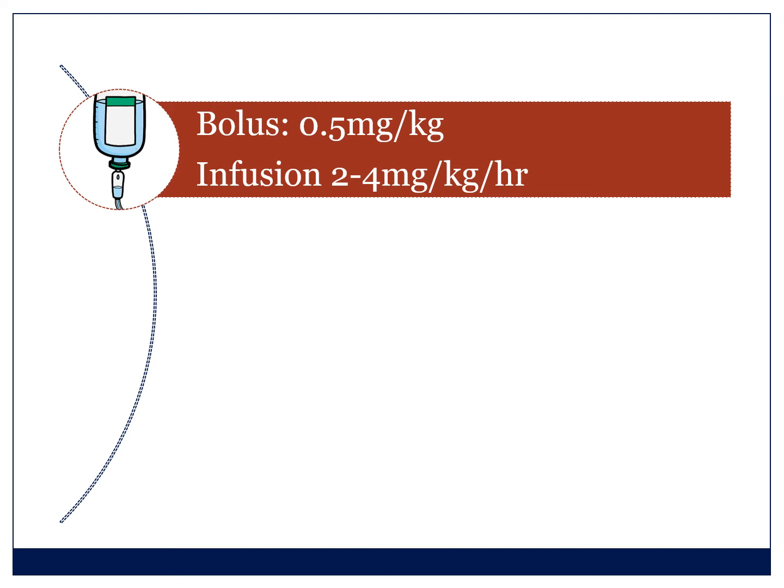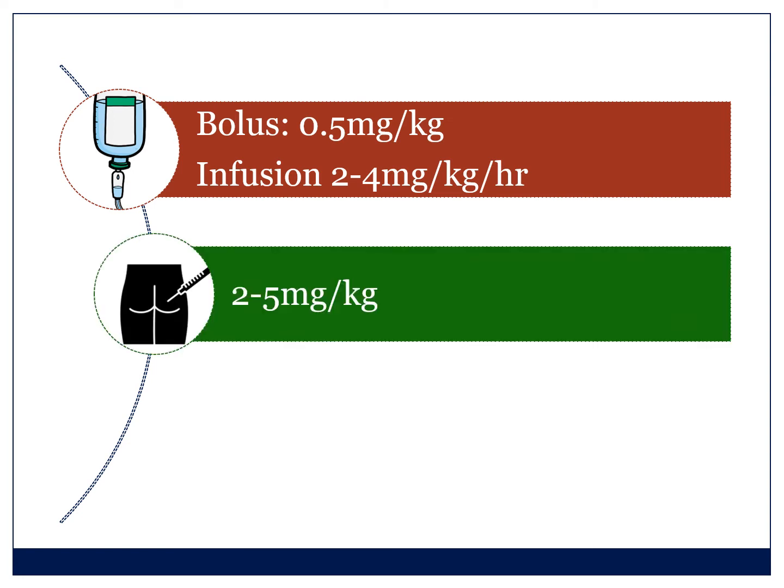These are the doses I use. When bolusing, I use half a milligram per kilogram intravenously and repeat as needed. For an infusion, I use two to four milligrams per kilogram per hour — the simple way is to draw up a four milligram per mil infusion, say 200 milligrams in 50 mils, and run it at the patient's weight; that gives you four milligrams per kilogram per hour. Intramuscularly, the dose range is two to five milligrams per kilogram; for a first dose I use five milligrams per kilogram IM. The IM route is often helpful in pediatric patients.